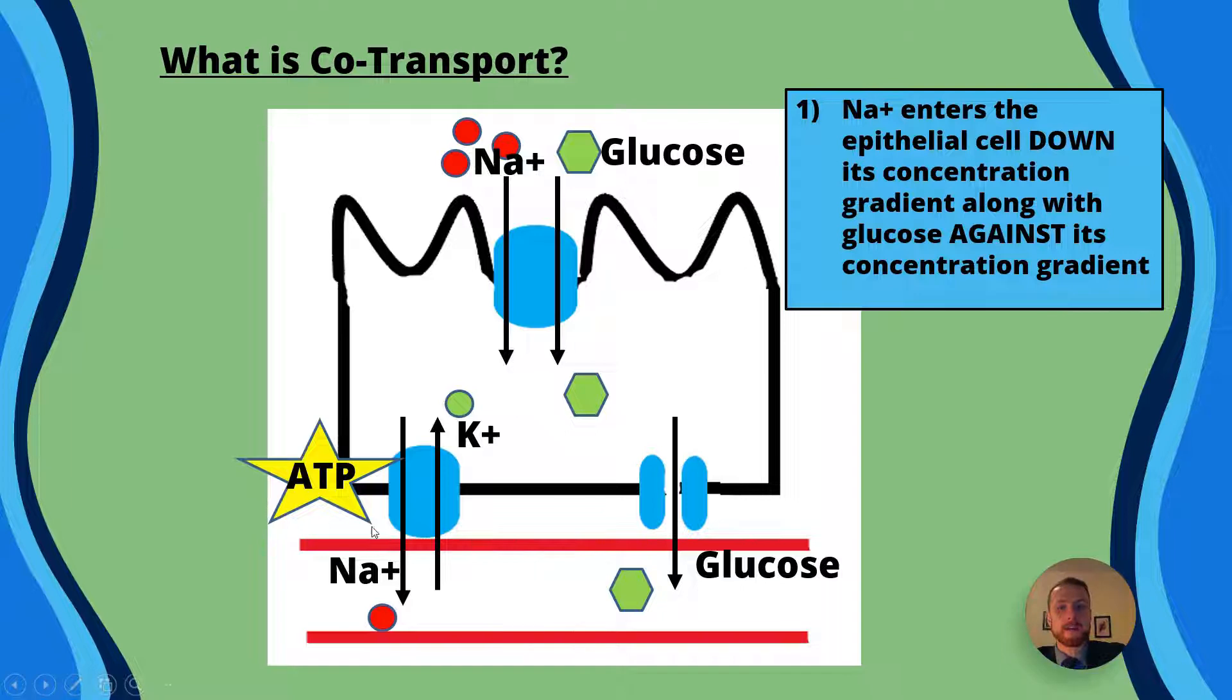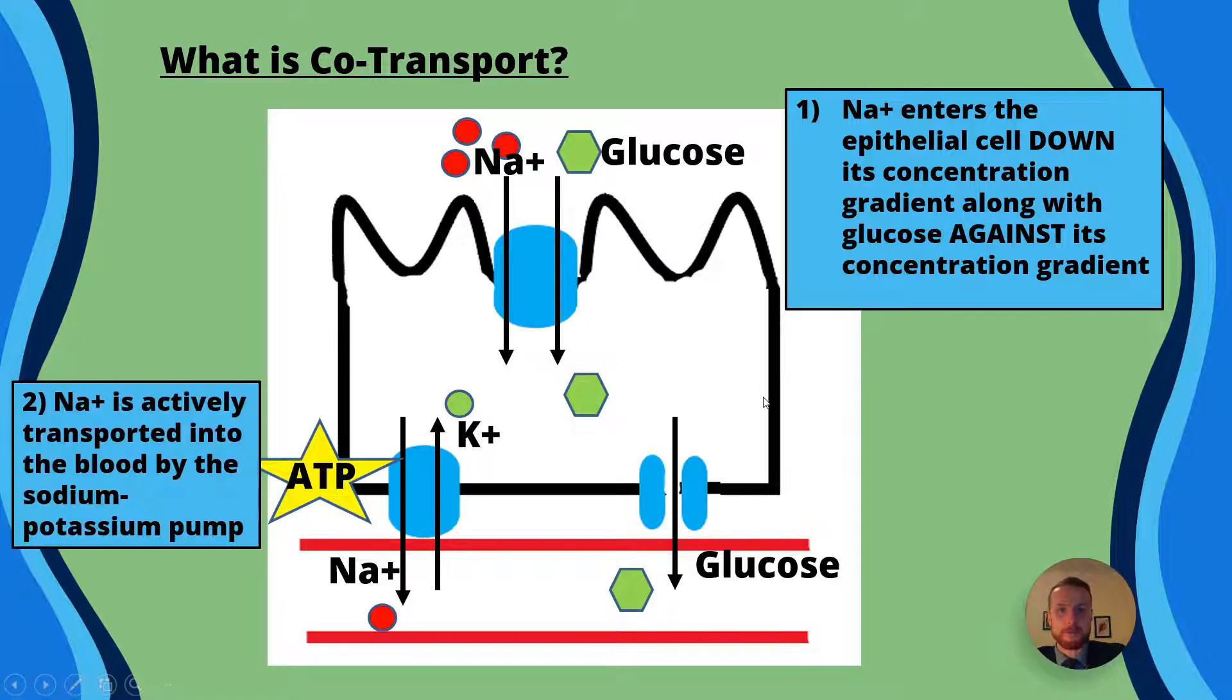Now co-transport has three main steps going on. The second one is that we have the sodium potassium pump, so sodium is actively transported out of the epithelial cell into the blood by the sodium potassium pump. Now because this is an active process it's going to require ATP, so that's going to get hydrolyzed, phosphate is going to remain bound and that's going to provide the energy for the carrier protein to change shape, moving sodium across the membrane, then it's going to return to its original position when the phosphate detaches. Now that's going to establish a concentration gradient for sodium and make sure that we don't reach equilibrium so it's going to keep co-transport happening.